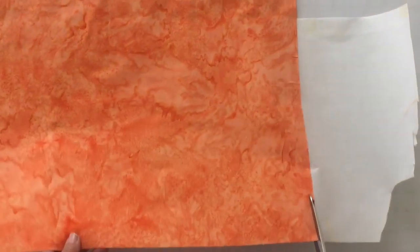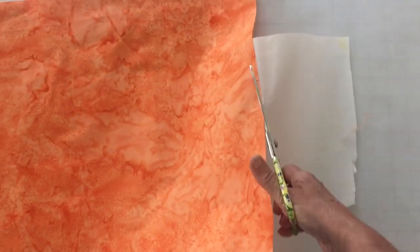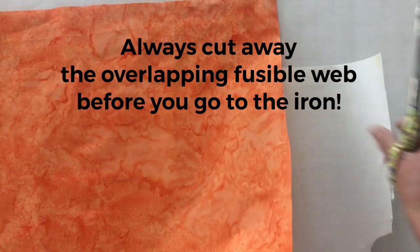Now we still have this exposed fusible web hanging over the edge right here that we have to cut away. So now that I found my scissors, I'm going to cut that excess away.